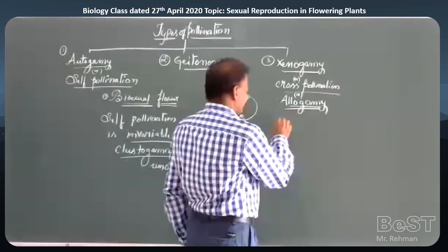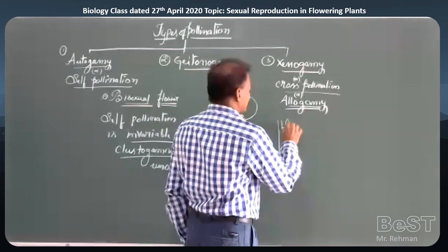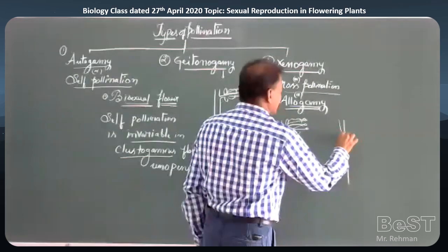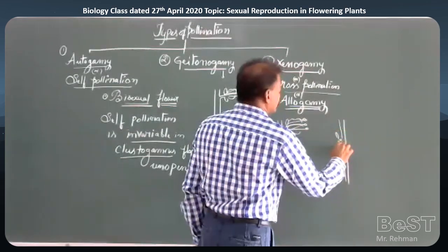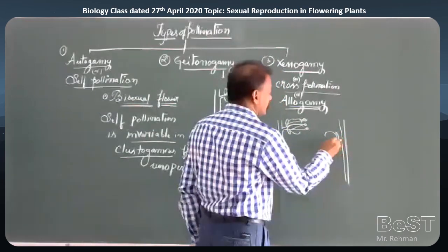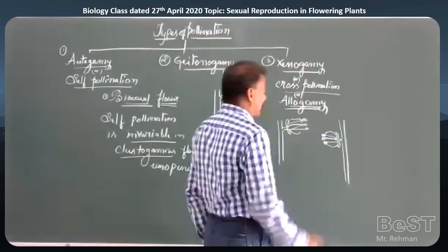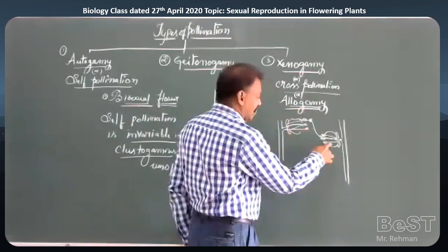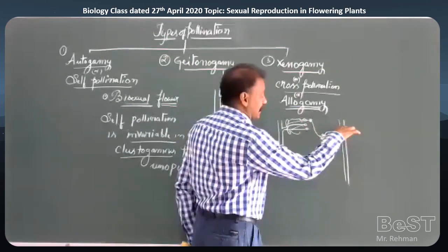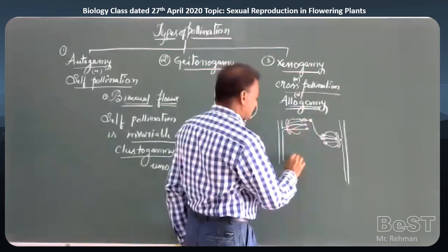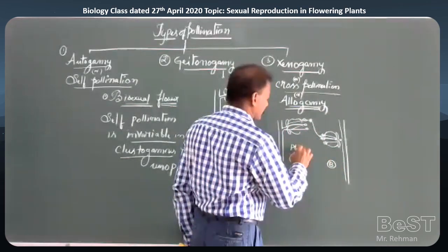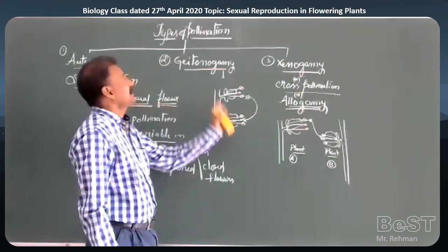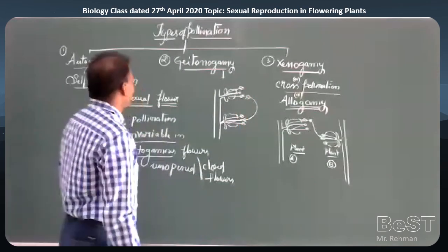Xenogamy or cross-pollination (allogamy) involves two different plants belonging to the same species. Pollen is transferred from the anthers to the stigma of a flower on a different plant, but both plants must belong to the same species — Plant A and Plant B. These are the three types of pollinations covered in the previous class.